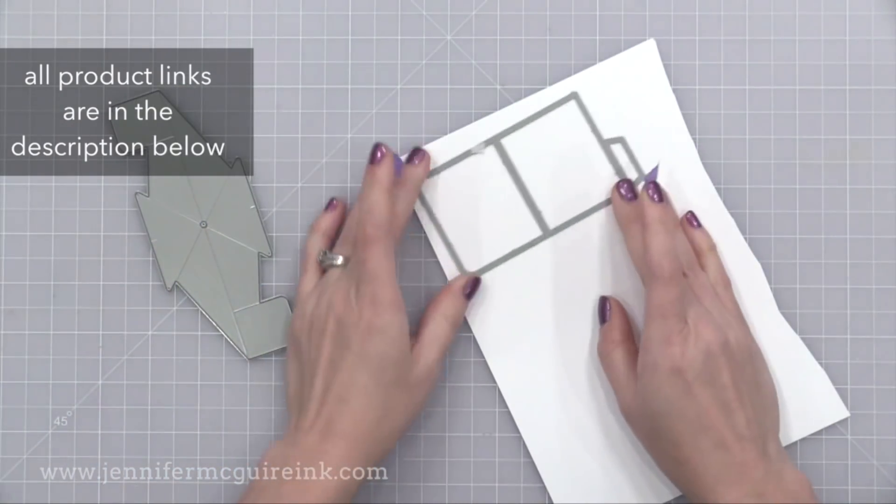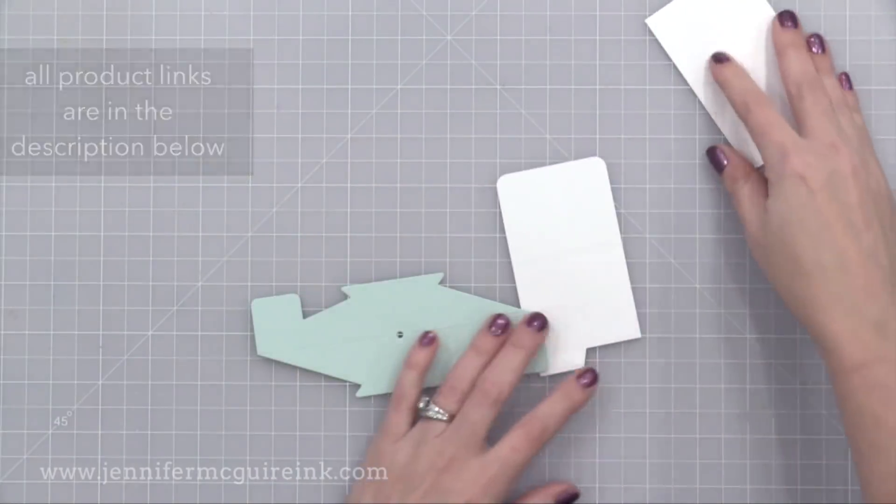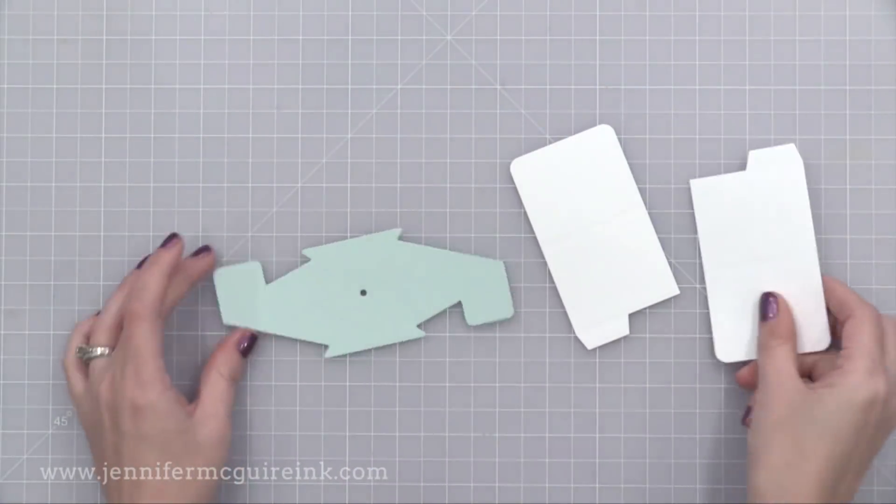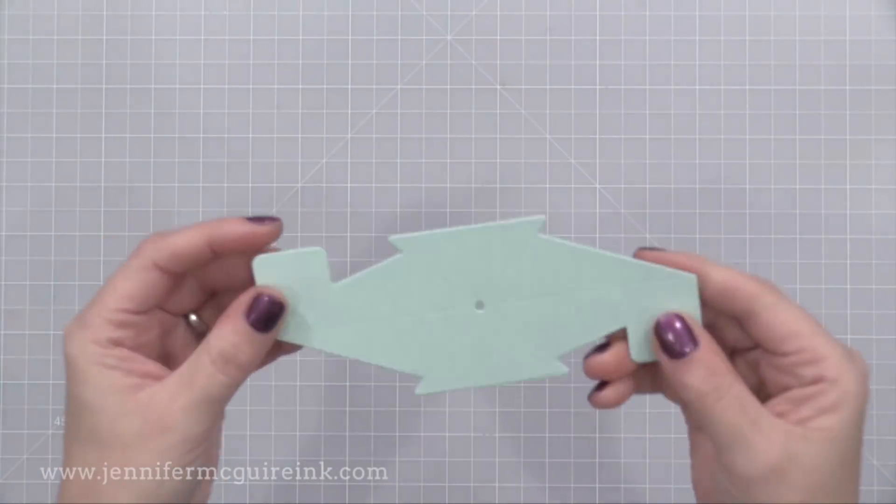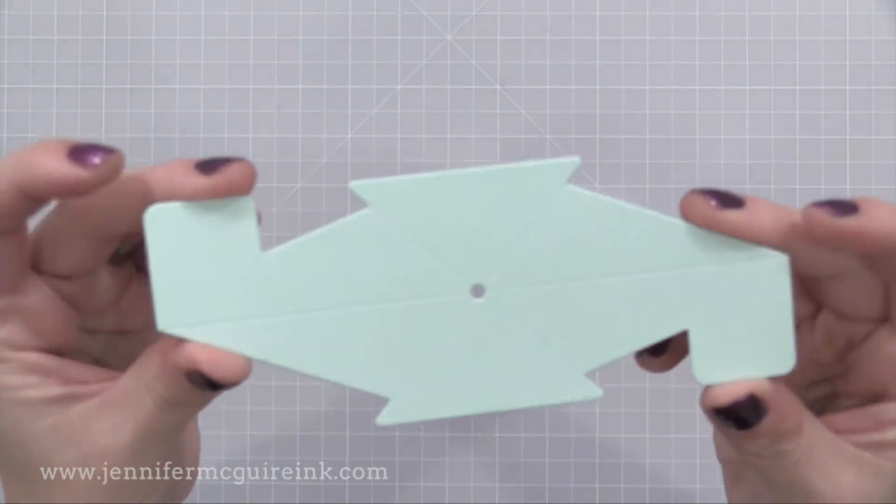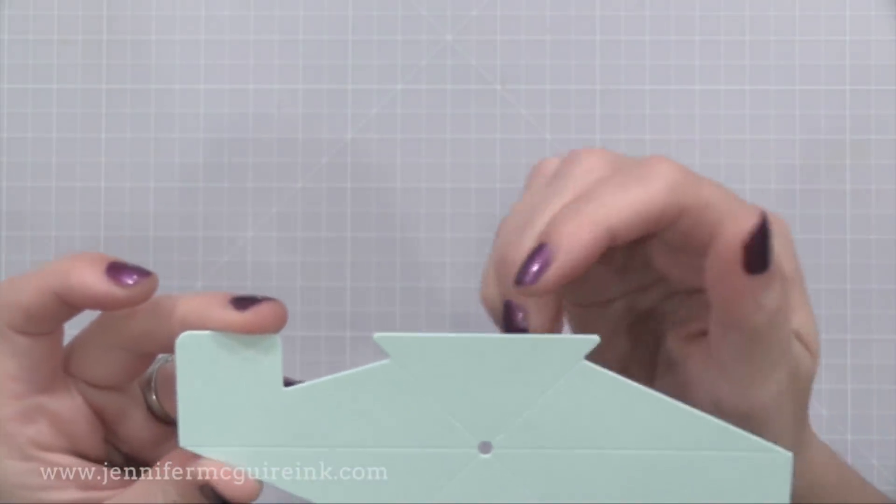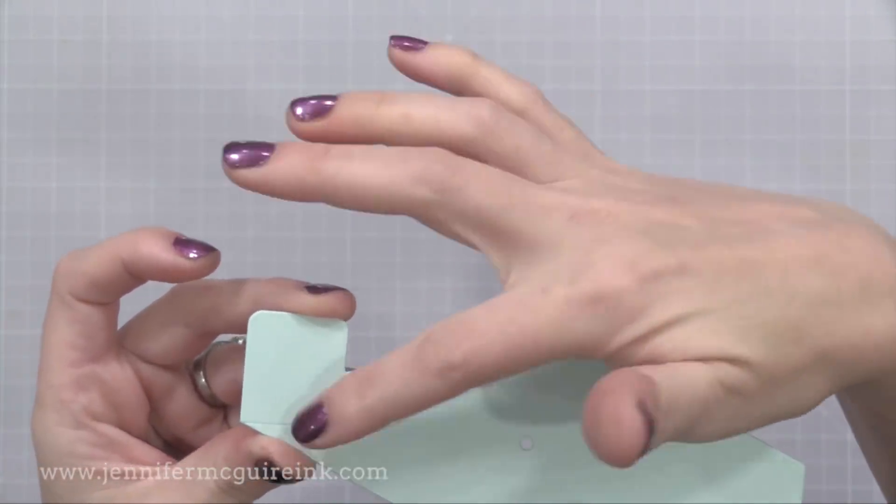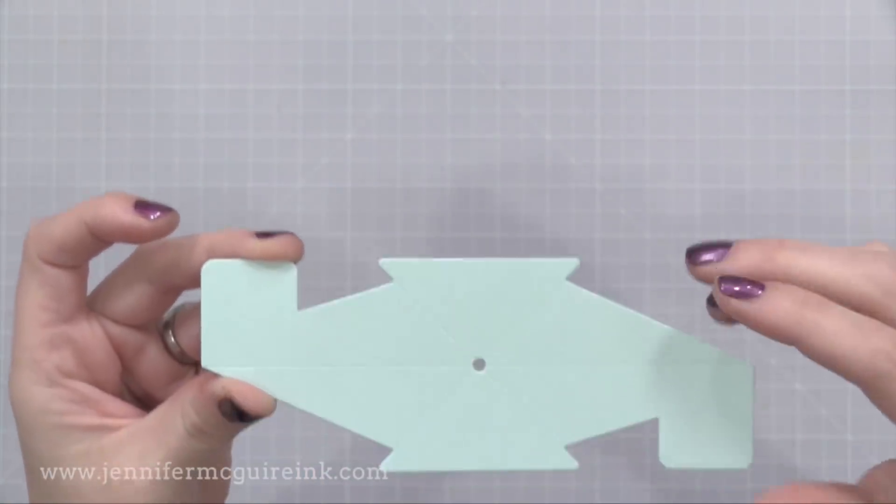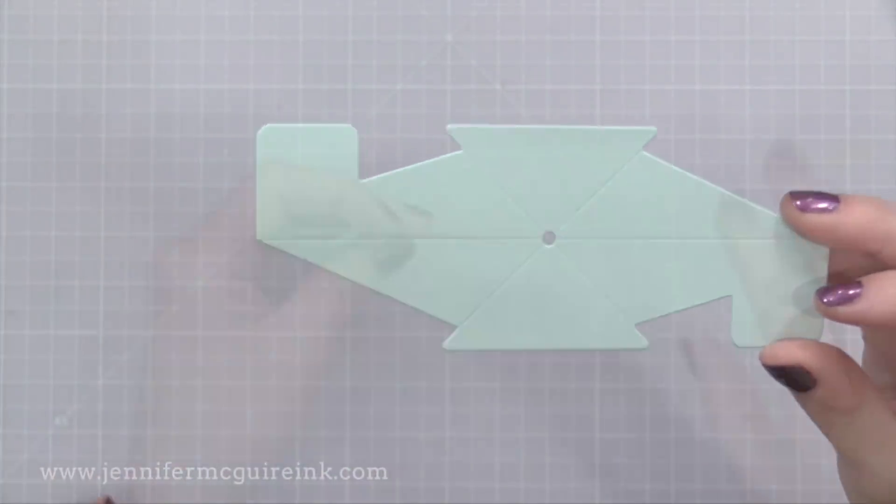You need to create three die cuts to do the pop-up, two of these tabbed rectangles, and one of that funky looking shape that I think looks kind of like a muscle man with his arms out and his fists out. Now you'll notice there are score lines and tick marks that the die creates on the die cut. Those are very helpful in assembling and I'll explain them all.